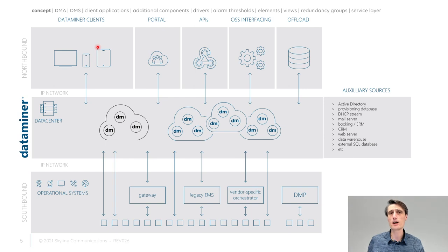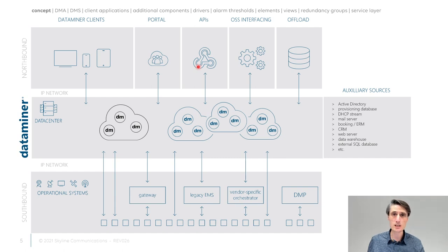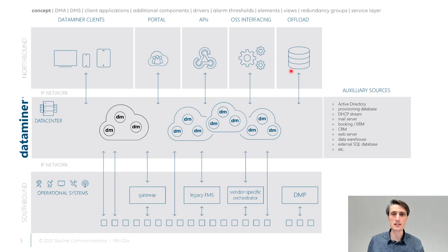On the northbound side, the most important interface is the DataMiner Cube client, used to operate the system. We can also build portals and have a vast amount of APIs available — it's an open system. We make that information available for third-party developments, and you can easily pull information from DataMiner into your own environment, interface with OSS, or offload to third-party data warehousing.